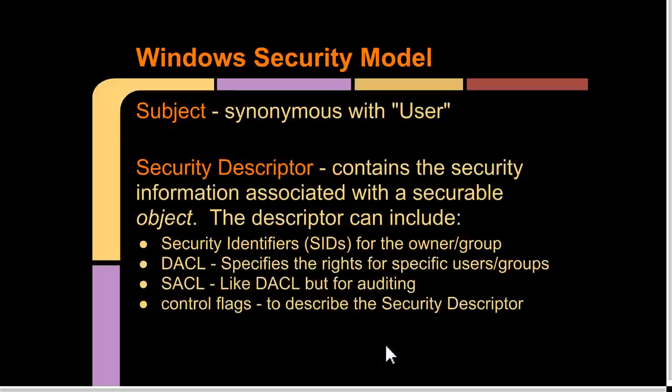In the Windows security model, things are broken down into subjects and objects. A subject is basically an entity synonymous with a user. Before talking about objects, I need to talk about security descriptors. A security descriptor is a data structure that contains security information associated with a securable object. It usually includes: Security Identifiers (SIDs) for the owner and group, the Discretionary Access Control List—which specifies on an individual basis which users are allowed to perform which permissions—and the Security Access Control List (SACL), which specifies under which of those actions events need to be logged. The SACL is just for auditing and logging.